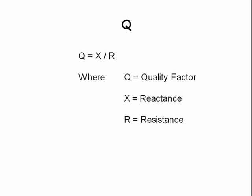Q, quality factor, is equal to X over R, where X is reactance and R is resistance. So Q equals reactance divided by resistance.